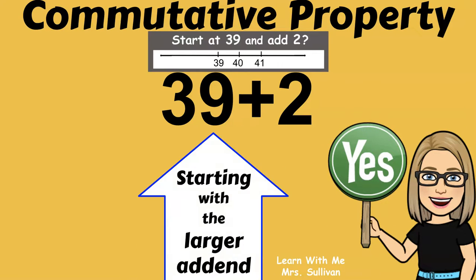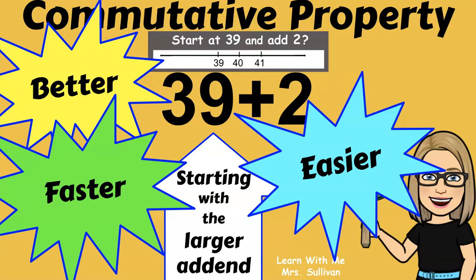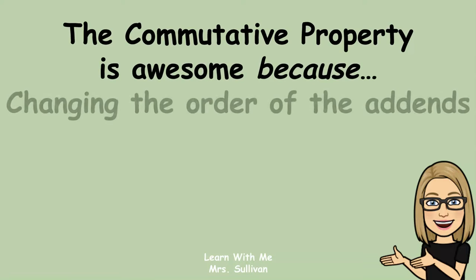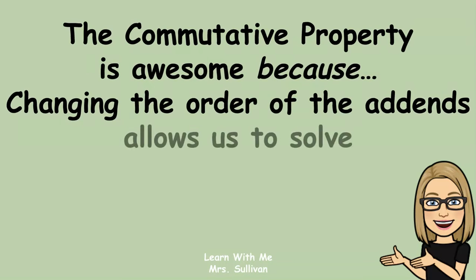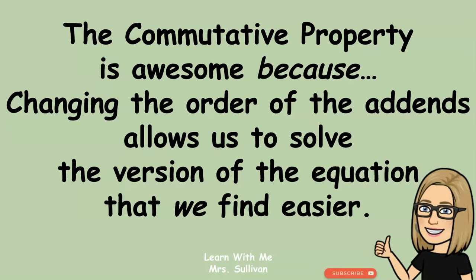Starting with the larger addend is better, faster, and easier. The commutative property is awesome because changing the order of the addends allows us to solve the version of the equation that we find easier.